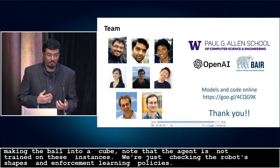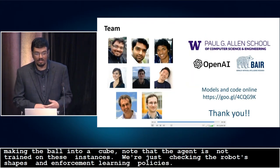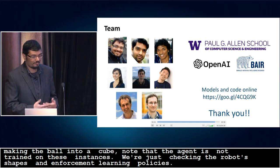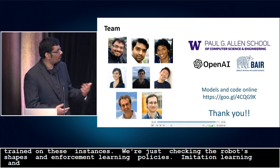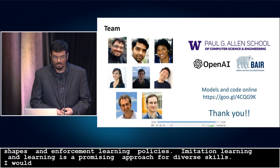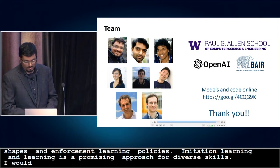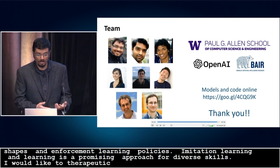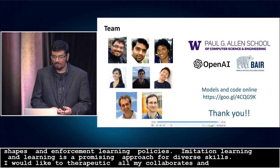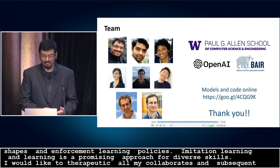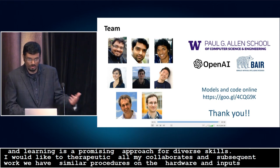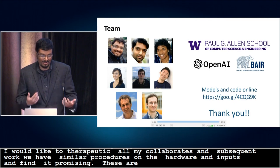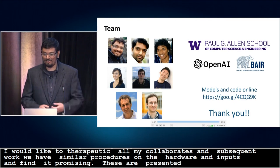In summary, we find that combining reinforcement learning and imitation learning is a very promising approach for real-world learning of diverse skills. I'd like to thank all my collaborators and institutions involved in this work — in particular, Vikash is a joint first author. In subsequent work, we have employed similar procedures on hardware and also learning with direct visual inputs, and find these results very promising. Some results are to be presented at a workshop at RSS, so please come check that out and visit our poster session.